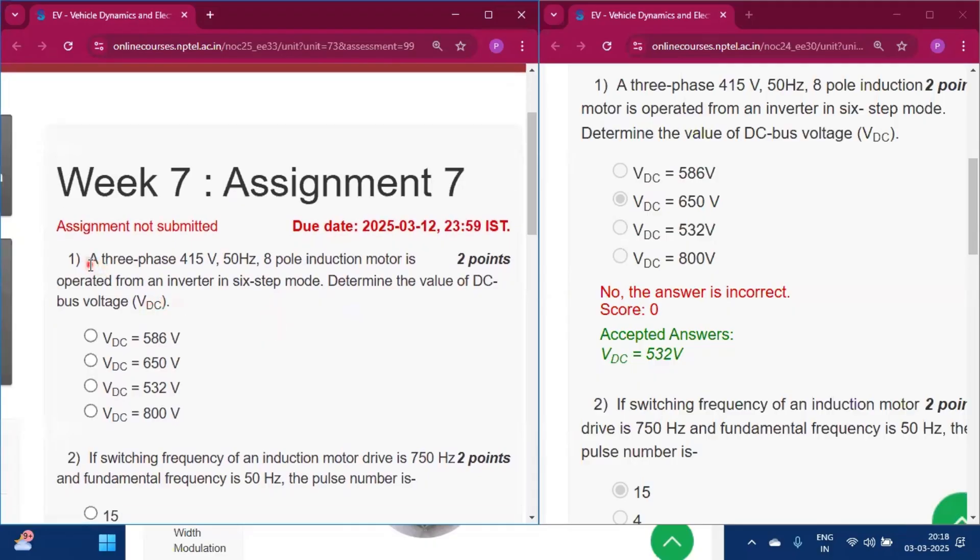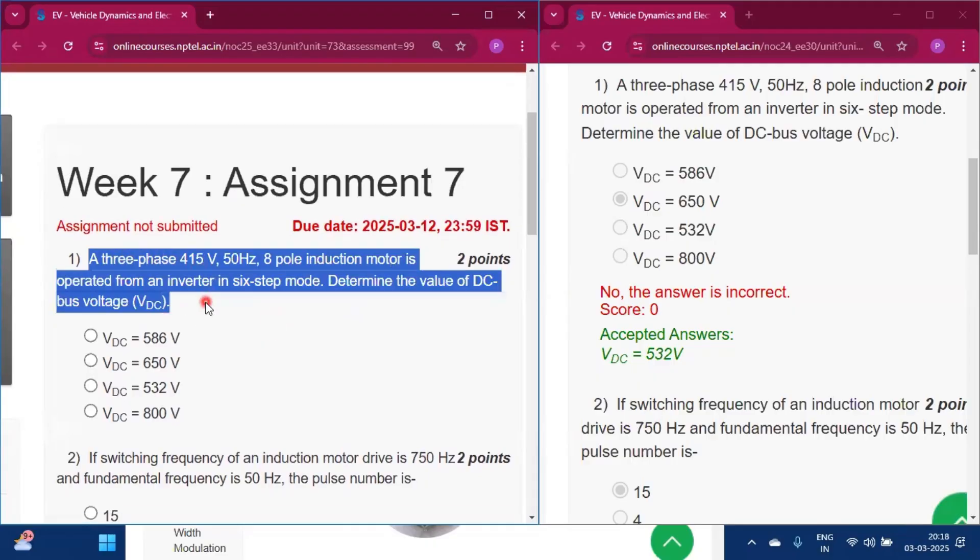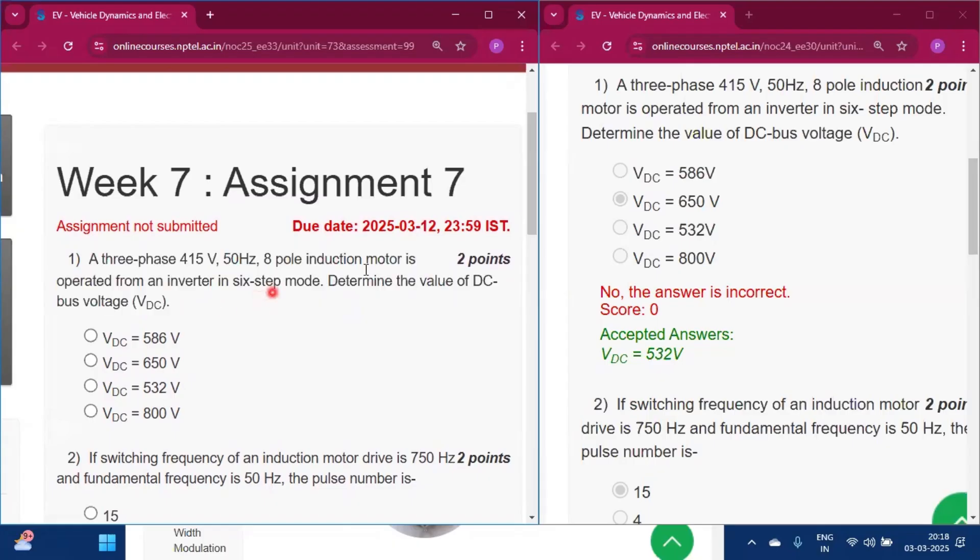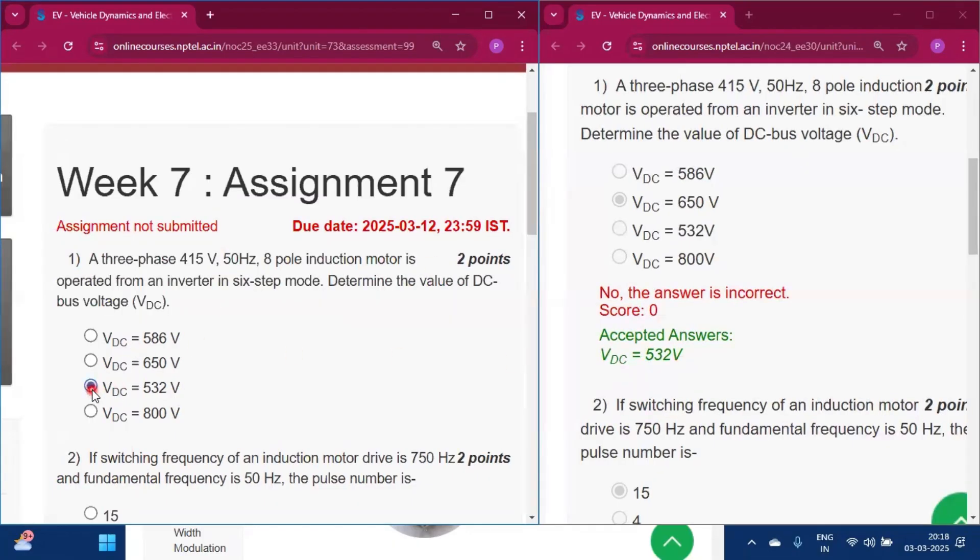The first question: A 3-phase 415V, 50Hz, 8-pole induction motor is operated from an inverter in 6-step mode. Determine the value of DC bus voltage. The answer is 532V, option C.